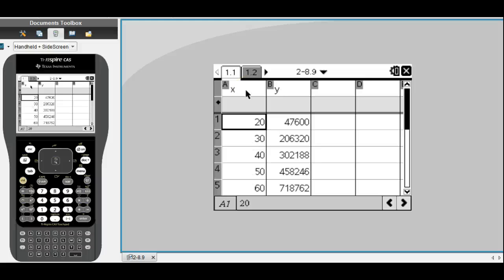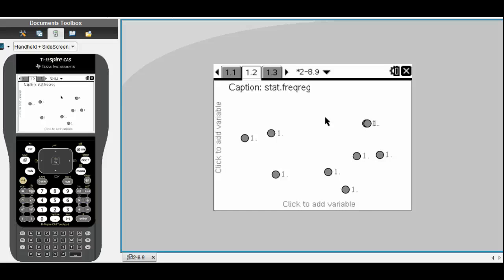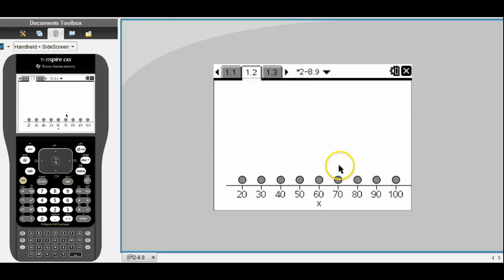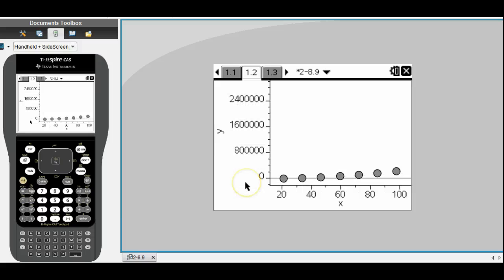I'm going to hit Control-I to add a new tab. I chose data and statistics. You'll see a bunch of random dots. Go ahead and click in the lower middle of where the x-axis would be and choose X. The data should respond, and then on the left hand side, click for the Y value. The data should graph itself for you.